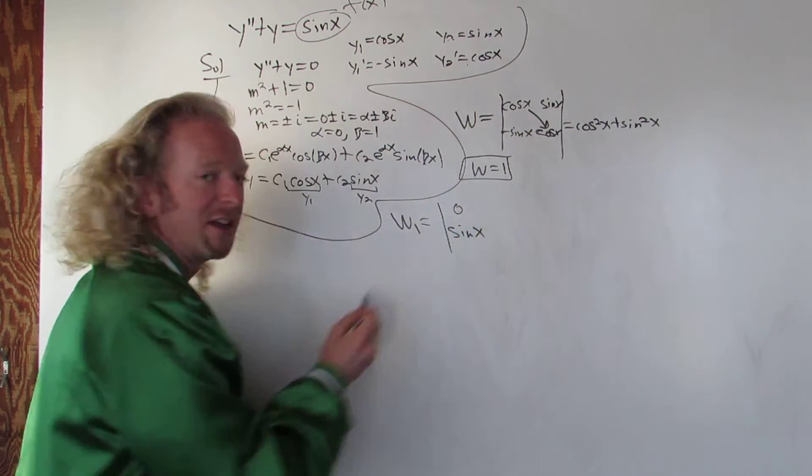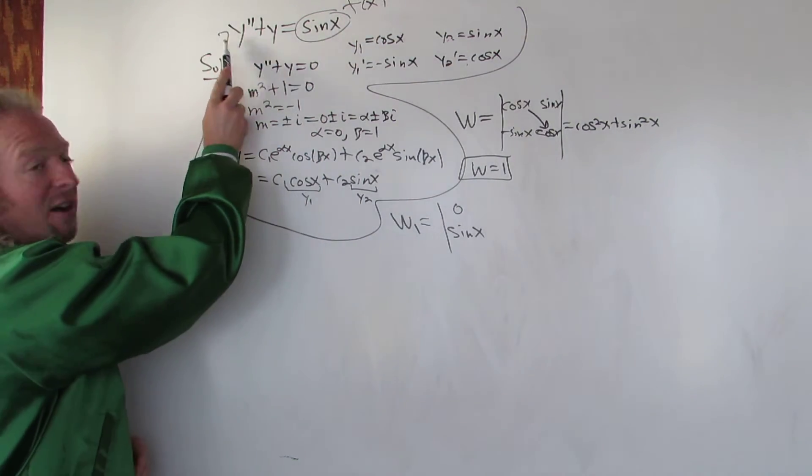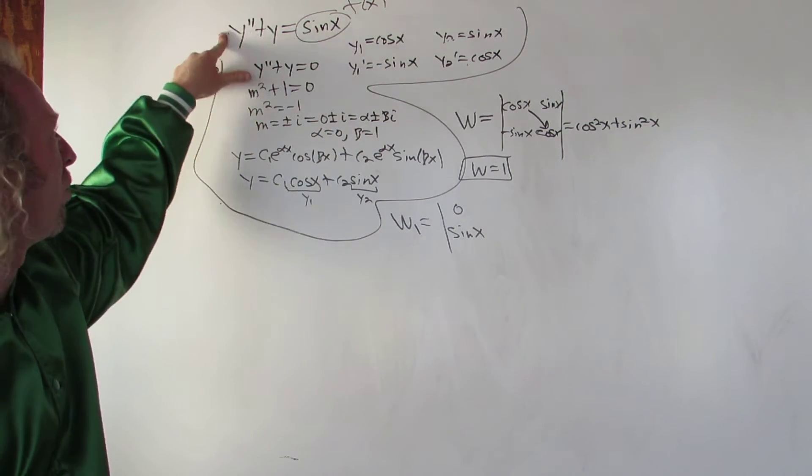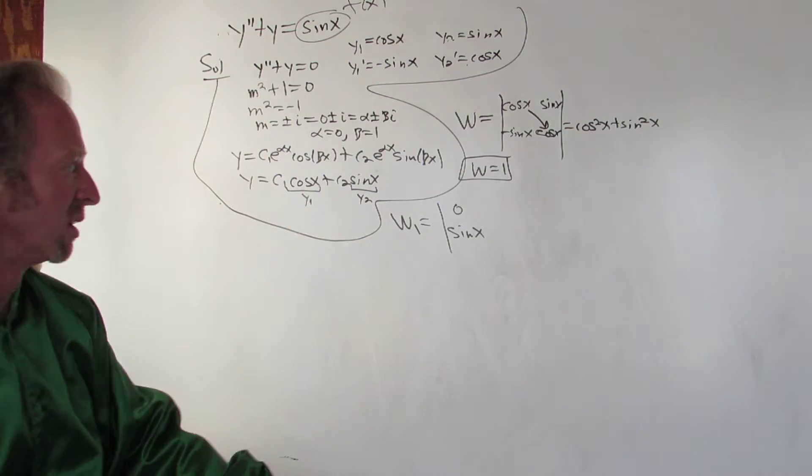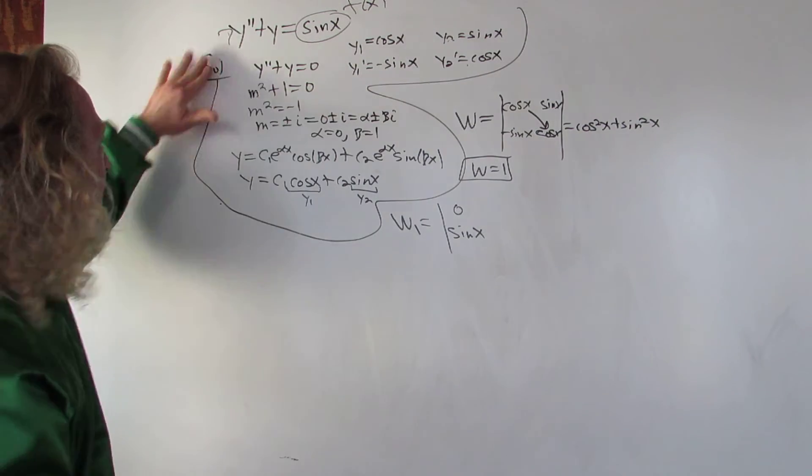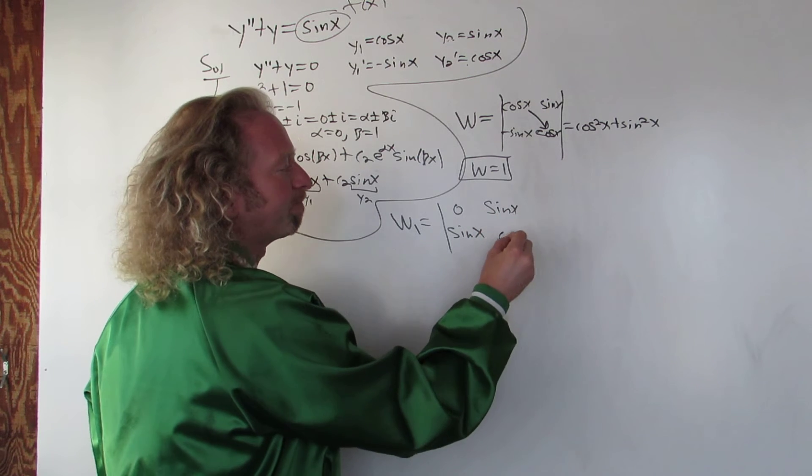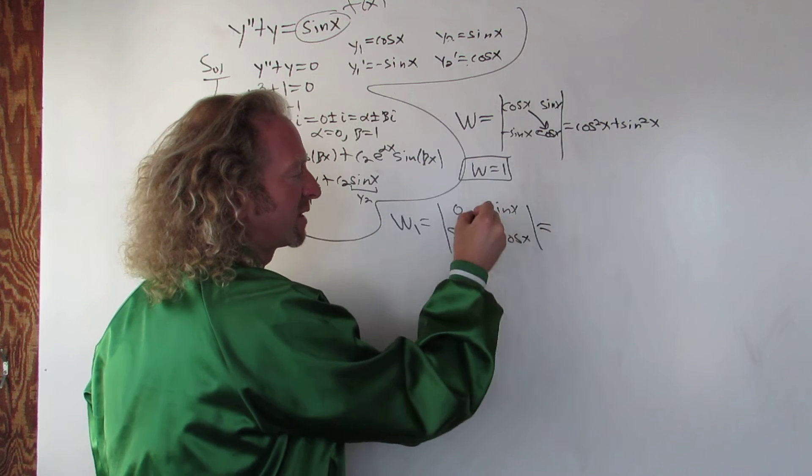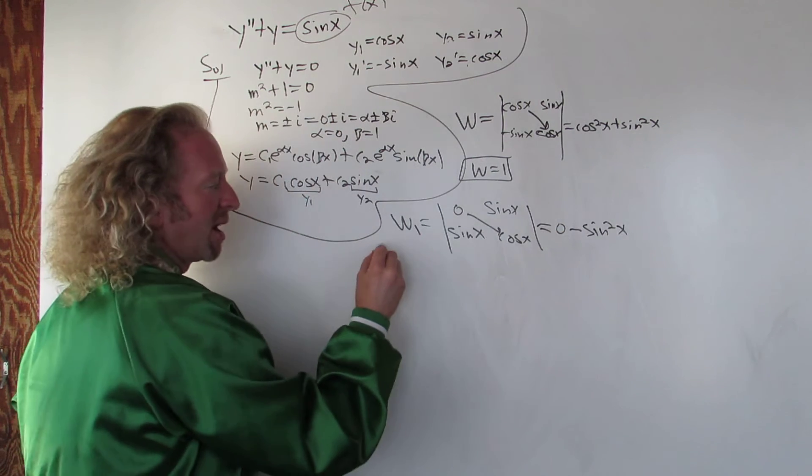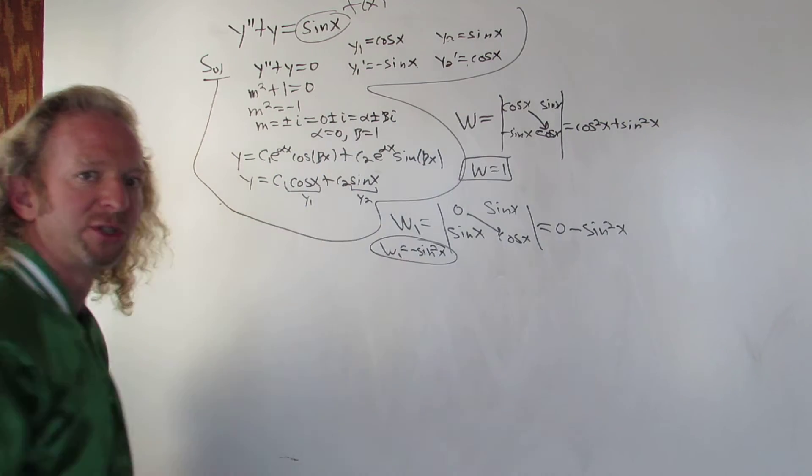If you were finding w2, you would cover up the second column and replace it with 0 and f of x. We're looking for w1, so we cover up the first column, replace it with 0 and f of x. Be warned, this has to be in standard form. Basically, that means you can't have a number here. If you have like a 7 here, game over. You've got to divide everything by 7. That has to be a 1 there. Otherwise, none of this works. It'll change your f of x. So watch out for that.